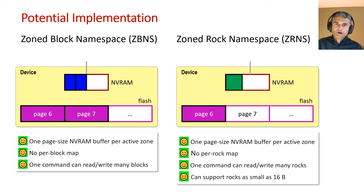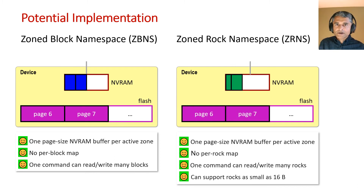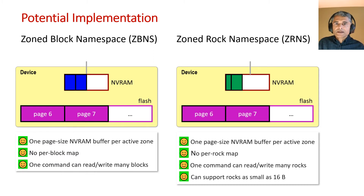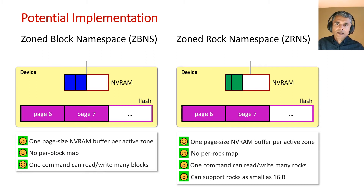The same setup can work for staging rocks because NVRAM is byte-addressable. Also, as with blocks, there's no need for a per-rock map. In fact, the only per-rock overhead is the metadata embedded inside each rock, which could be as small as a two-byte length and a two-byte CRC. This means the SSD could support rocks as small as 16 bytes, and the host can always read or write a large sequence of rocks with a single command.